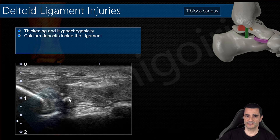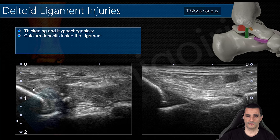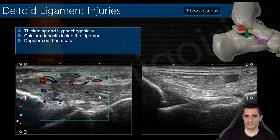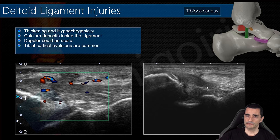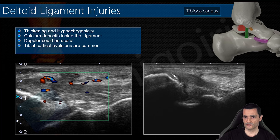You can find calcium deposits inside the ligament as a metaplasia of the injured ligament. This is another example of the hypoechoic thickened ligament compared to the normal side, in this case with calcium deposits inside the ligament and vascularization on Doppler. Tibial cortical avulsions are very common — always check the insertion. Here between the tibia and calcaneus you can see the thickening of the ligament and the avulsion, alongside a possible tear inside the posterior tibiotelar ligament.